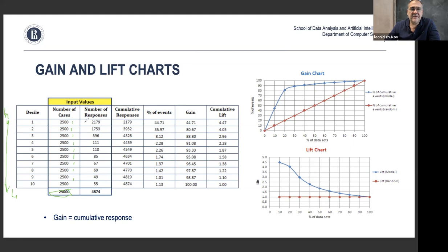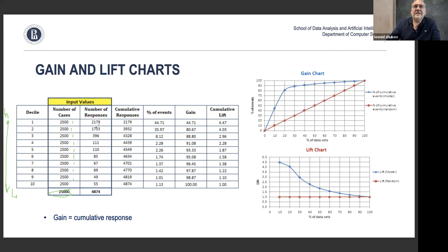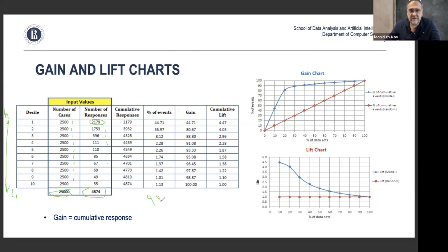If we hadn't sorted the customers at all, and we know there are 4,874 total responses out of 25,000 cases, then on average each bucket of 2,500 would have about 487 responses. But since we ranked the customers by likelihood of response, we get many more responses in the first bucket and fewer in each subsequent bucket.